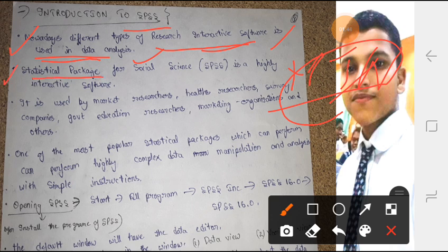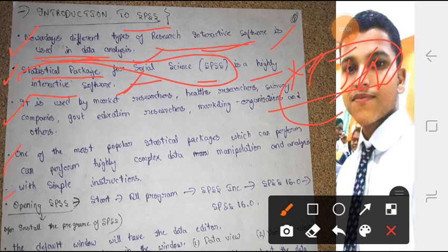Second point: Statistical Package for Social Science (SPSS) - you must know about it - is a highly interactive software. This is all about software. If I had to explain it properly, I would need a computer, but I don't have a laptop here, so I am sorry I am not able to demonstrate that, but I have already mentioned all important points for the examination.